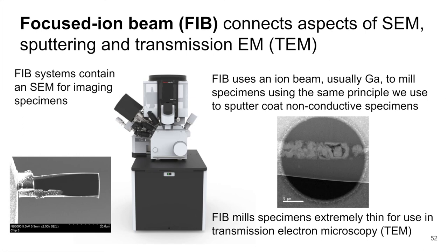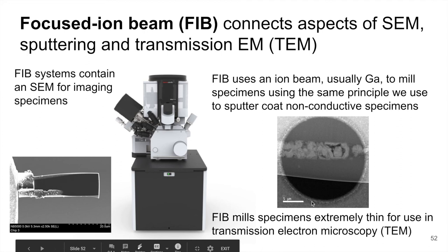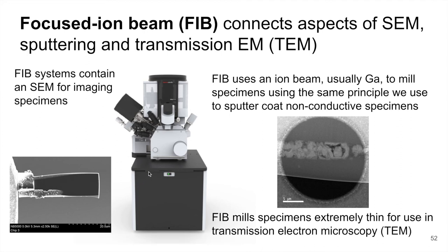I want to mention one last thing about SEM — Focused Ion Beam, or FIB — because it bridges the gap between SEM, which we're talking about now, and Transmission Electron Microscopy, or TEM, which we'll discuss next. The FIB process is used in TEM to prepare specimens, but the FIB system also functions much like an SEM, with an imaging component as well as a sample preparation component where we can actually manipulate and change the shape of samples.